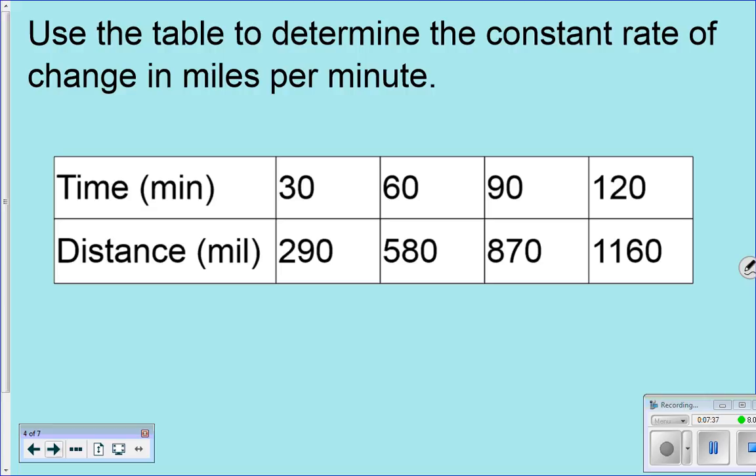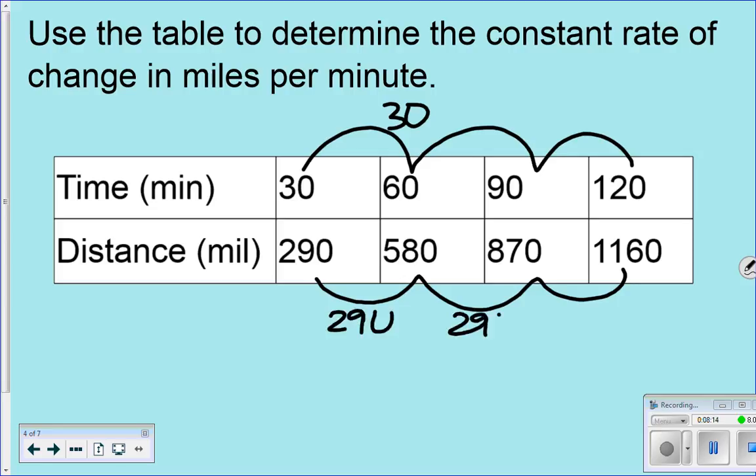Okay. Let's do this one. Use the table to determine the constant rate of change in miles per minute. So, first of all, do you think this is in proportion? Yes! Yeah, it is! Wow, that was easy. Yeah. So, the first thing I'm going to do, since I know it's in proportion, I know something is happening that's consistent. So, the first thing I'm going to say to myself, what am I going up by here? So, I know I'm going up by 30. What about here? 290. Yeah, that's what I'm going up by. 290 here, 290 here, 290 here. And this is also another way. Like I said, if you don't know if it's in proportion, figure it out, what it's going up by on the top and on the bottom. And if they're the same, then it's going to be in proportion.